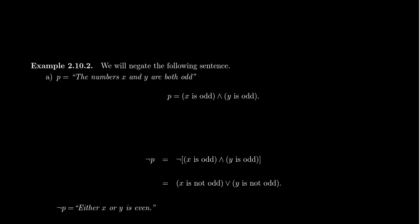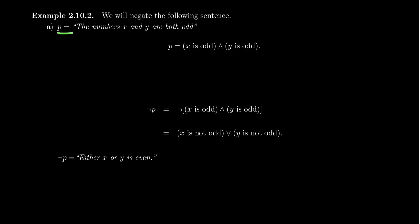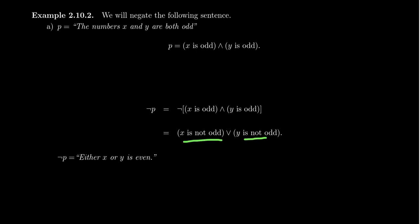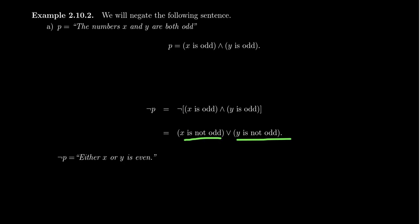Let's take the statement P: 'the numbers X and Y are both odd.' We can recognize that this is a conjunction — we have two statements: 'X is odd' and 'Y is odd,' and P is their conjunction. So P is 'X is odd and Y is odd.' If we negate P, since we're taking 'not' of an 'and,' the DeMorgan laws tell us we negate each statement and the 'and' turns into an 'or.' So 'not(X is odd and Y is odd)' is the same as 'X is not odd or Y is not odd.'